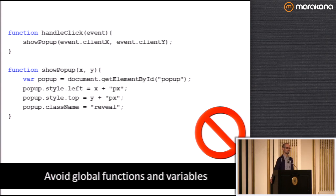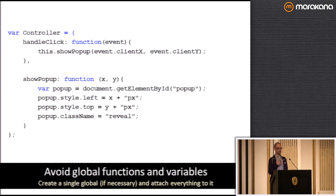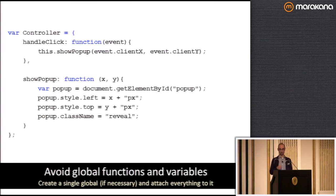Also avoid global functions and variables. Your methods should really always be attached to some object. In most cases you can get away with having one global object for your product — we have a top-level Box object, Yahoo had a top-level Yahoo object. Just pick one thing and namespace everything off of that. Don't throw things randomly into the global scope — it gets really confusing and really hard to write tests.